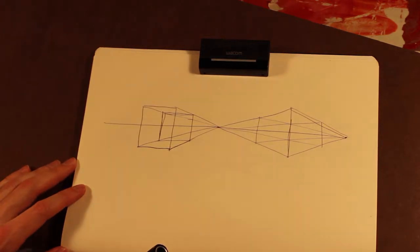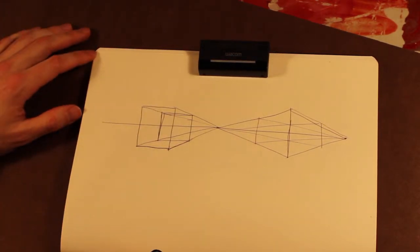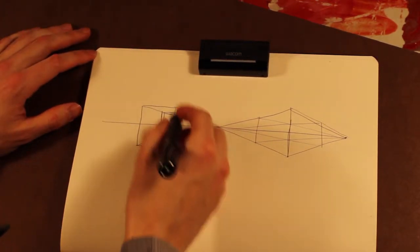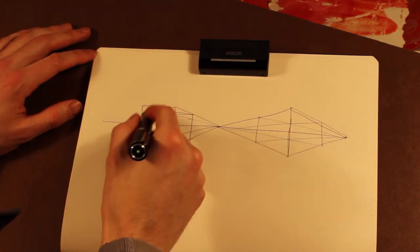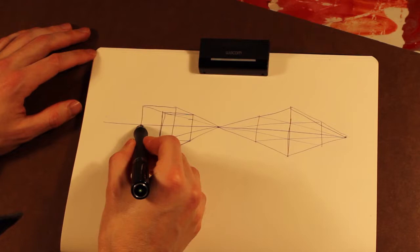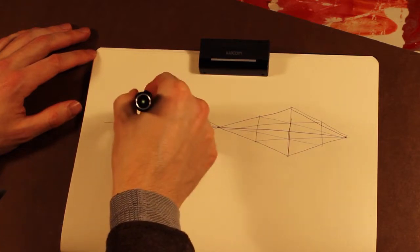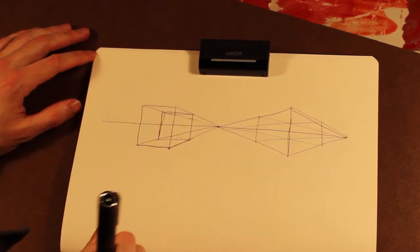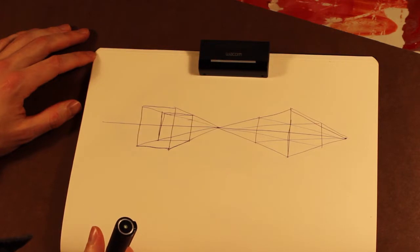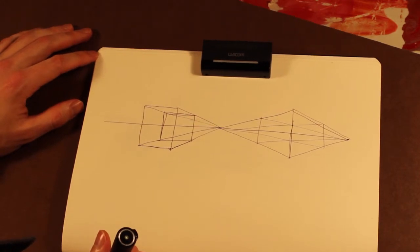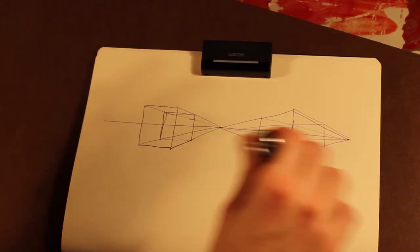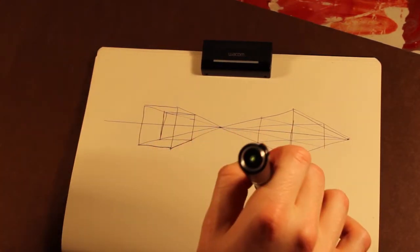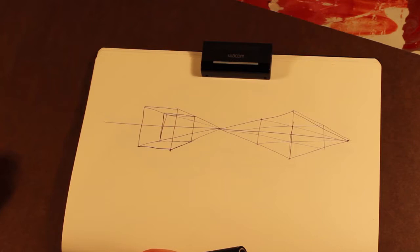There you have it. It's a pretty simple sort of system, here and here. And in a later video, we'll talk about why and how one point perspective tends to break down, and why choosing your vanishing points at the right distance in two point perspective is really important for your drawing.